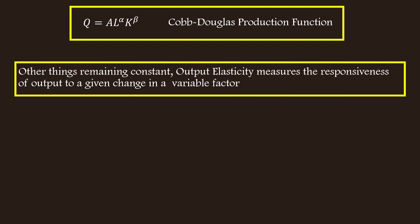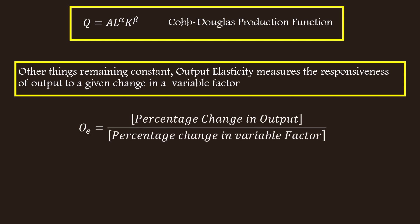Output elasticity can be defined as, other things remaining constant, output elasticity measures the responsiveness of output to a given change in a variable factor. The formula we are going to use is: QE equal to percentage change in output divided by percentage change in the variable factor.